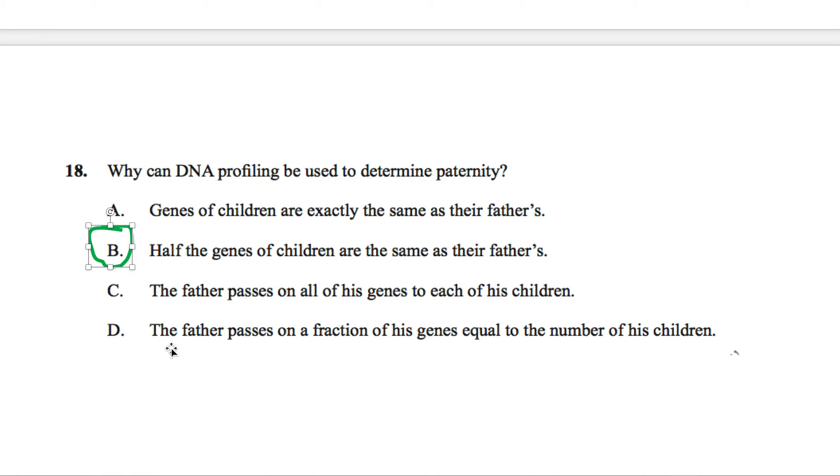How about D, the father passes on a fraction of his genes equal to the number of his children. This is such a weird one because imagine how could that even be possible. How do you know how many kids you are going to have? Because this question is basically saying if you are going to have six kids, each time you have a kid only a sixth of your DNA will be passed on, but how do you know you're going to have six kids?